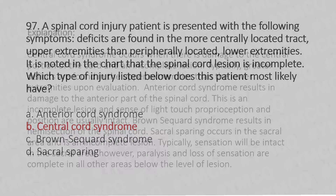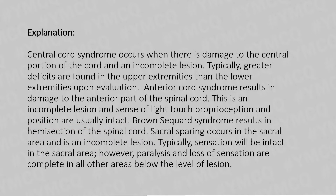Central cord syndrome occurs when there is damage to the central portion of the cord and is an incomplete lesion. Typically, greater deficits are found in the upper extremity than the lower extremity. Anterior cord syndrome results in damage to the anterior part of the spinal cord — an incomplete lesion where light touch, proprioception, and position sense are usually intact. Brown-Séquard syndrome results in hemi-section of the spinal cord. Sacral sparing occurs in the sacral area as an incomplete lesion — sensation is intact in the sacral area, but paralysis and loss of sensation are complete in all other areas below the level of lesion.